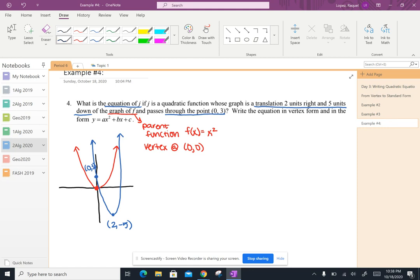If we remember the structure for the vertex form is what I've written in black here. So the first thing that I want to do is substitute in two in for h and negative five in for k. So I have y equals, I don't know what a is, x minus two squared minus five.